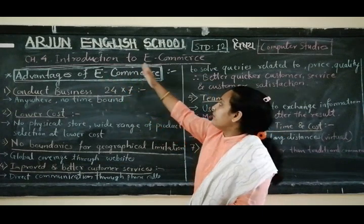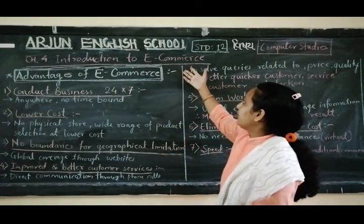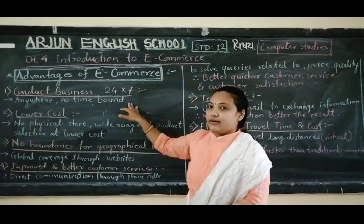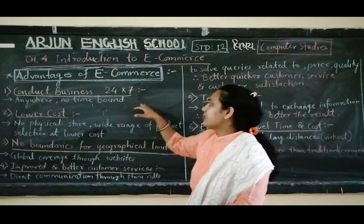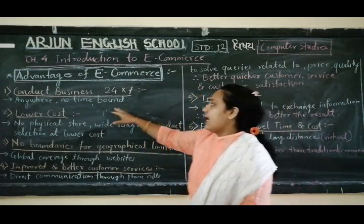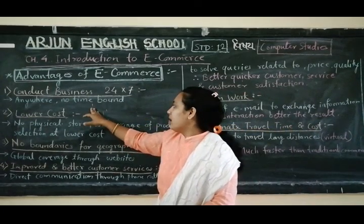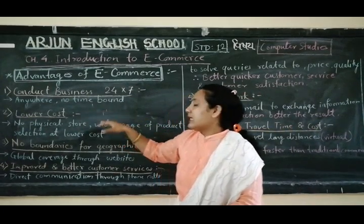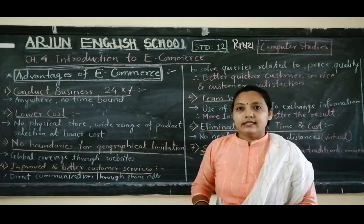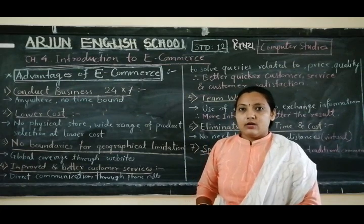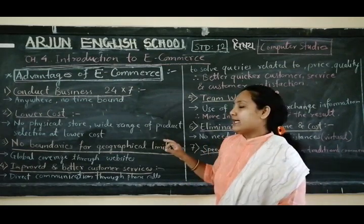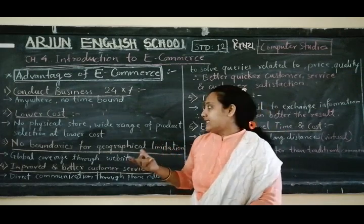This is part of chapter 4: introduction to e-commerce. The very first advantage is to conduct business 24 by 7 — anywhere, no time out. That means day or night, there is no time limitation. Throughout the year, business can be conducted day or night.